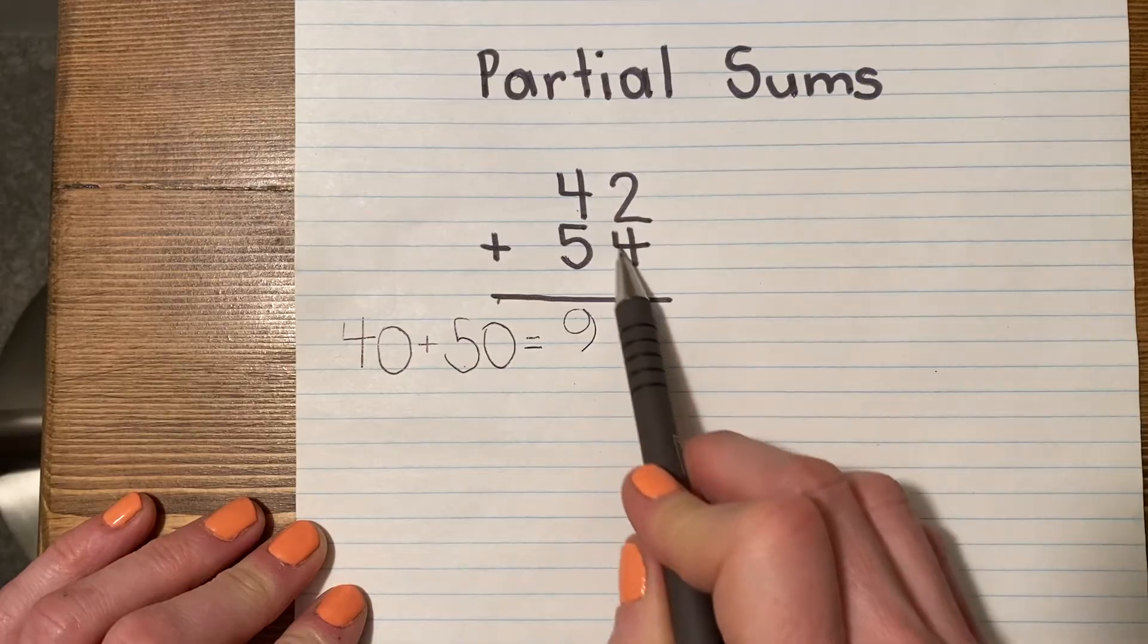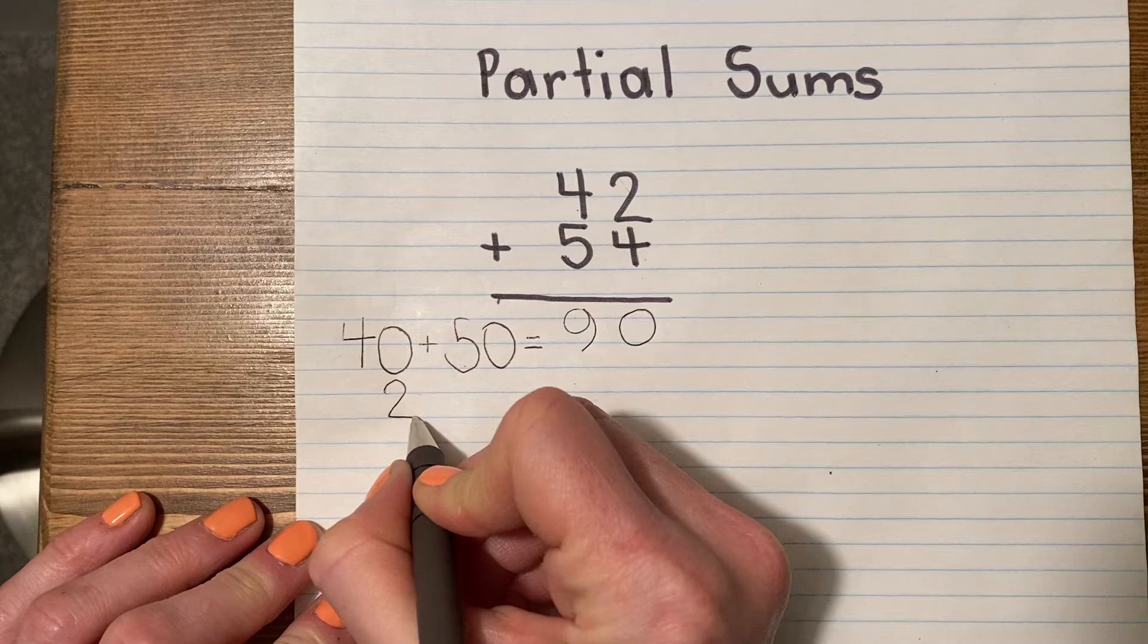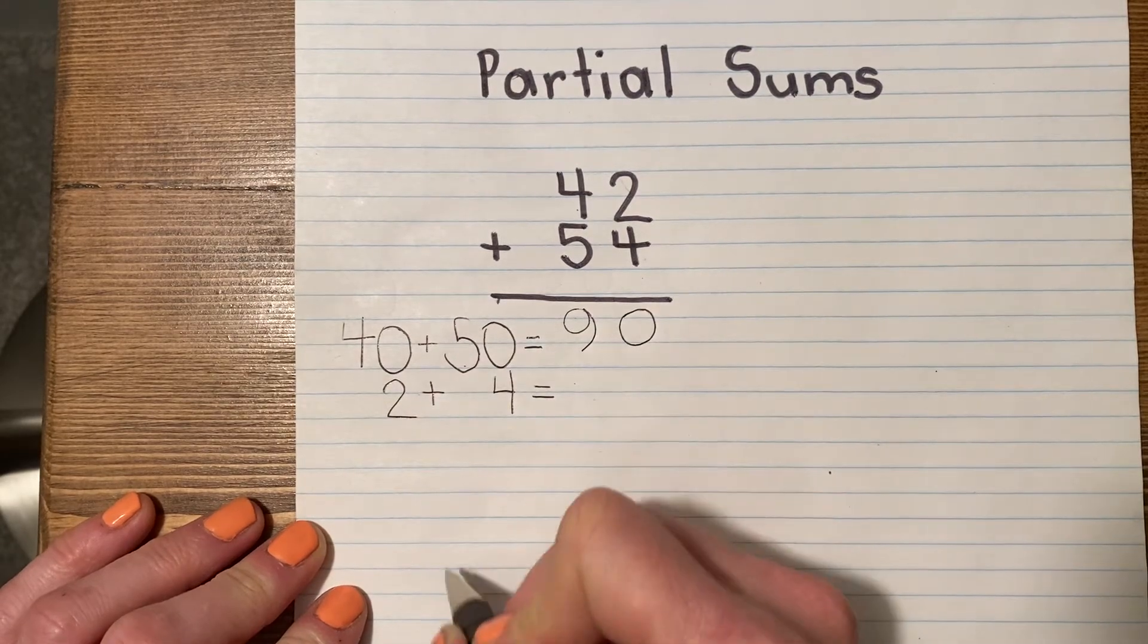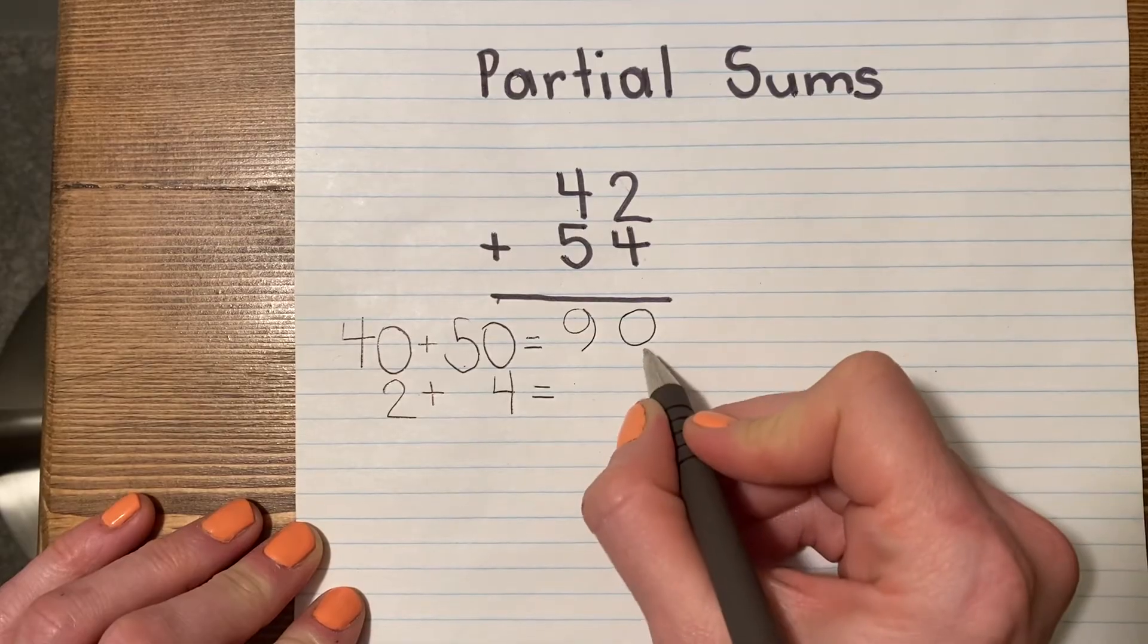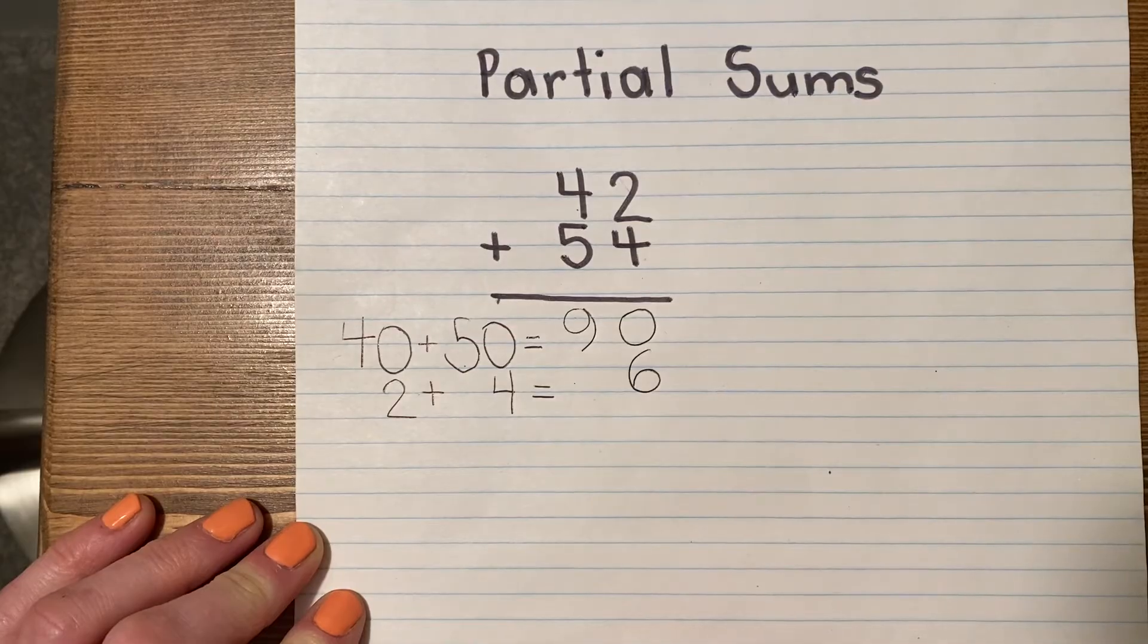Now I'm going to move on to my ones. 2 plus 4. I'm going to write that right here. 2 plus 4 is 6, and I make sure that I line it up in the ones column.